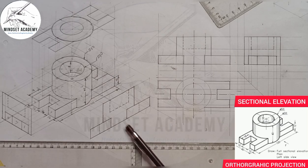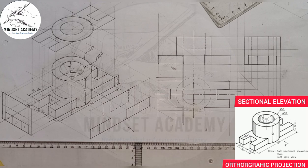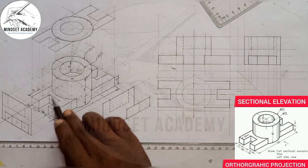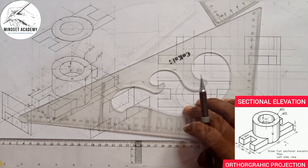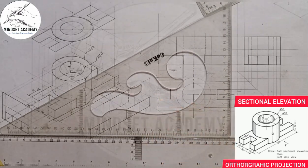Now, what about sectioning? Sectioning usually exposes hidden figures — hidden views that you cannot see. Since we are told to draw the section front elevation, that means I am going to split this into two. It will become something like this, meaning I am applying my cutting plane.